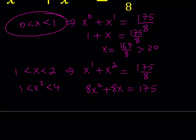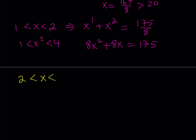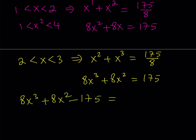So what we're going to do now is go to the next interval. If x is between 2 and 3, the floor value is 2 and the ceiling value is 3. So we get x^2 + x^3 = 175/8, which looks pretty complicated. This is a cubic equation - Cardano and all that stuff. We're not going to go into those. We're going to solve this in a really nice way. Cross multiplying first, we get 8x^3 + 8x^2 = 175. Putting everything on the same side: 8x^3 + 8x^2 - 175 = 0.